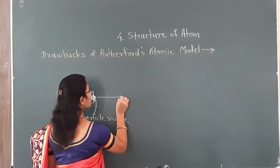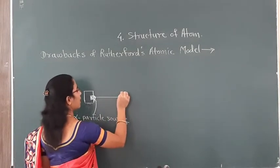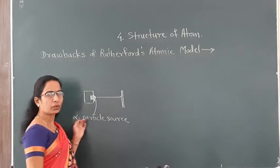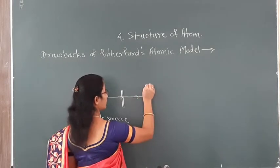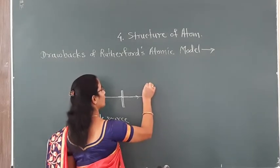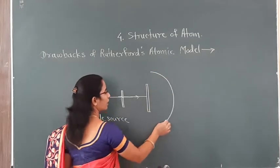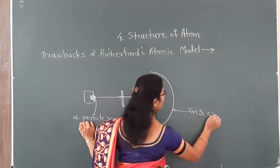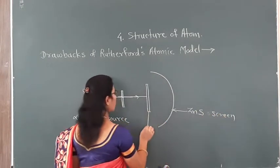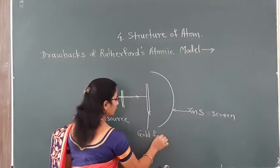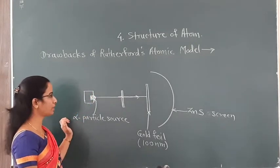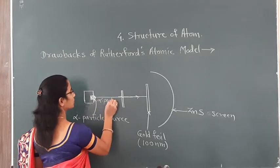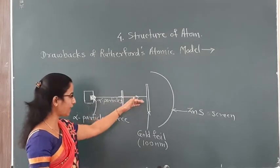The alpha particles were radiated by this source and passed through a thin lead slit so that a fine beam was obtained. This beam of alpha particles was struck on a very thin gold foil. The foil was surrounded by a zinc sulfide screen. The gold foil was very thin — its diameter is about 100 nanometers. He then made some observations when the alpha particles were allowed to strike this gold foil.